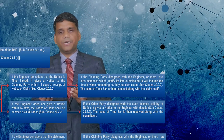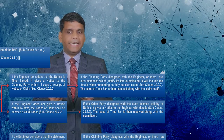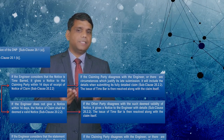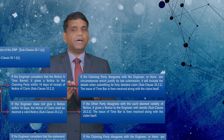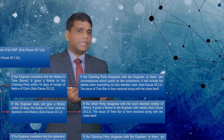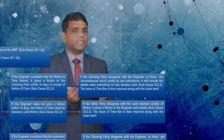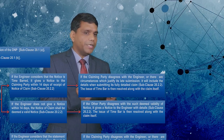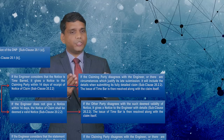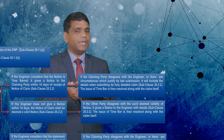If the engineer does not give a notice within 14 days upon receiving a notice of claim, then this notice shall be deemed a valid notice. However, if the other party disagrees with such deemed validity, it gives notice to the engineer with details, and the issue of time bar is again resolved along with the claim itself.